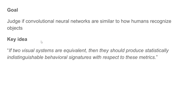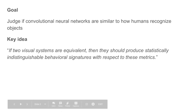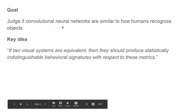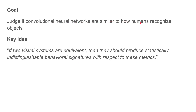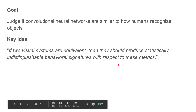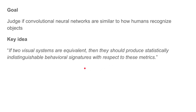I am going to cover a very small aspect of the paper. The aspect here is that in the paper they are trying to judge if convolutional networks are similar to how humans recognize objects. They are trying to understand if they internally work in similar ways. The key idea they use is: if two visual systems are equivalent, then they should produce statistically indistinguishable signatures with respect to these metrics. This makes sense because if two systems are working internally the same, their responses as black boxes to specific metrics have to be the same. They do this comparative analysis between humans and convolutional networks.